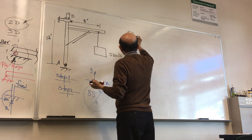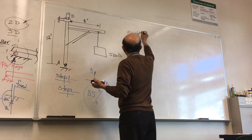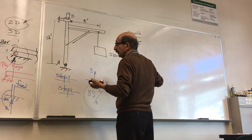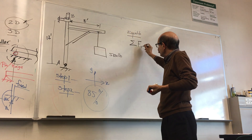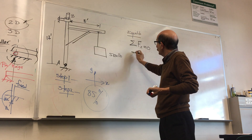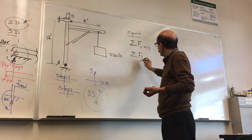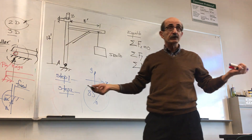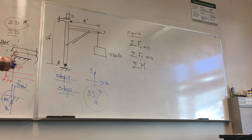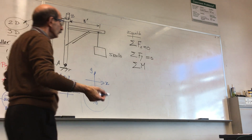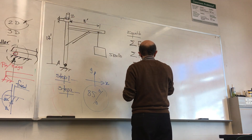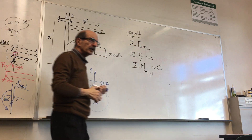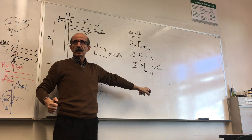Equilibrium means summation of all forces acting on the structure is zero — which implies the X components and Y components are each zero. And summation of moments about any point is zero. Couples are free vectors, so you can sum moments about any point. That is the tool that we have.